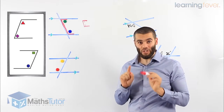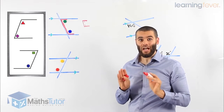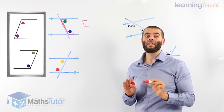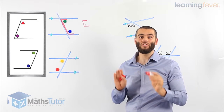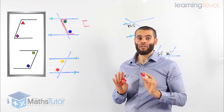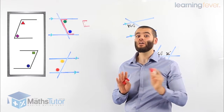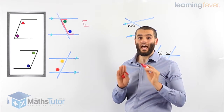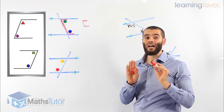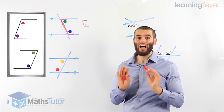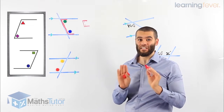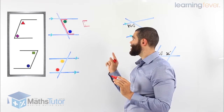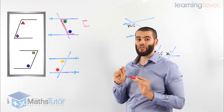And that is — co-interior angles are not equal. They have a relationship: they add up to 180 degrees. Corresponding angles are equal, alternate angles are equal; however, co-interior angles are not equal — they add up to 180 degrees. It's very important that you don't miss that out and you actually remember that very important rule.